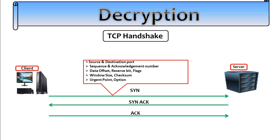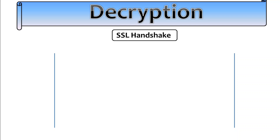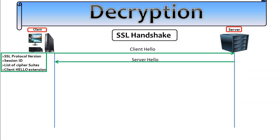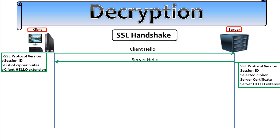Once the TCP handshake is done, they will start the SSL handshake. During the SSL handshake, the client sends a Client Hello which includes the SSL protocol version, session ID, list of cipher suites, and client hello extensions. Based on the Client Hello, the server replies with a Server Hello which includes the SSL protocol version, session ID, the selected cipher suite chosen from the client's list, the server certificate, and server hello extensions. The client then initiates a pre-master secret exchange with the server, and session key creation begins.